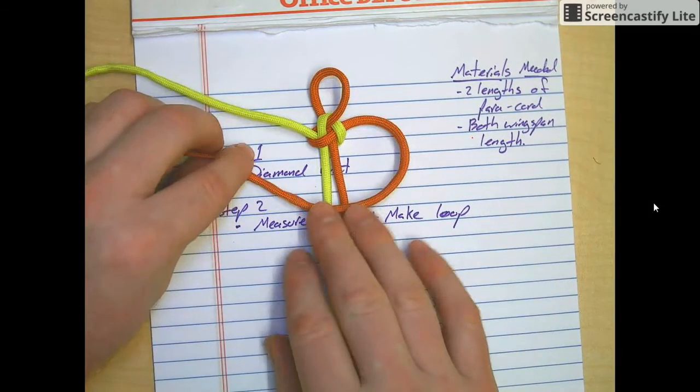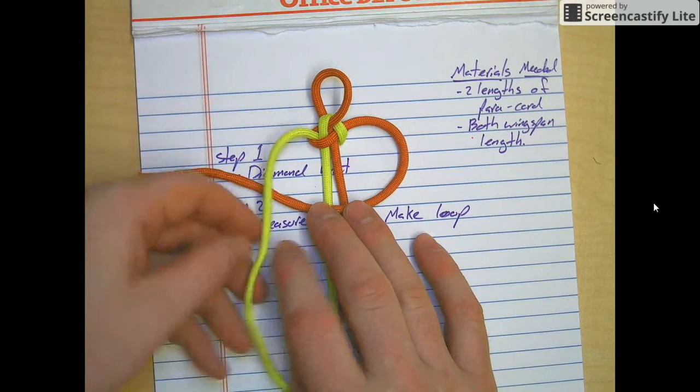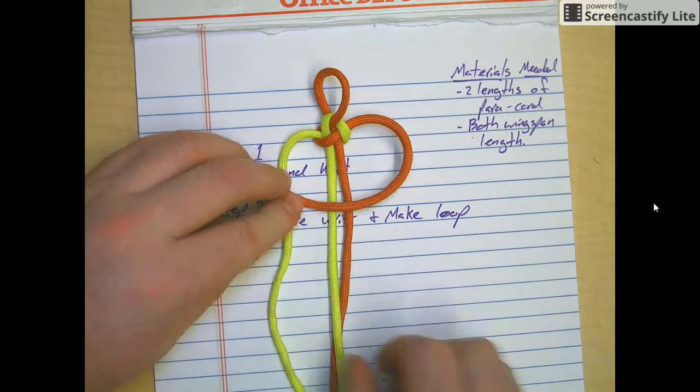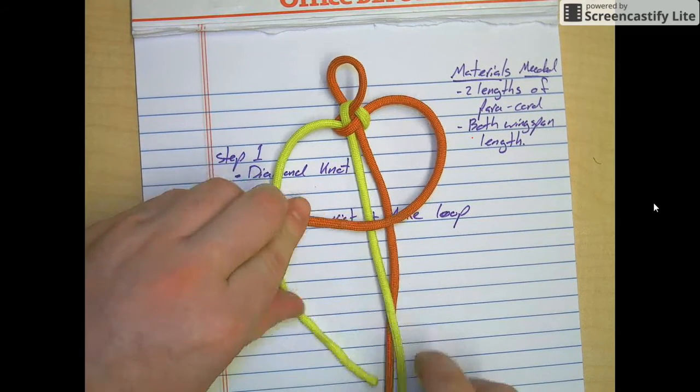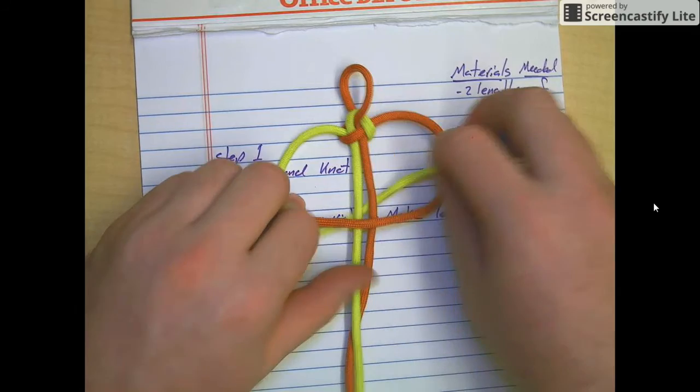You curl it around, place this over. It goes underneath the two and back up to the hole you made.